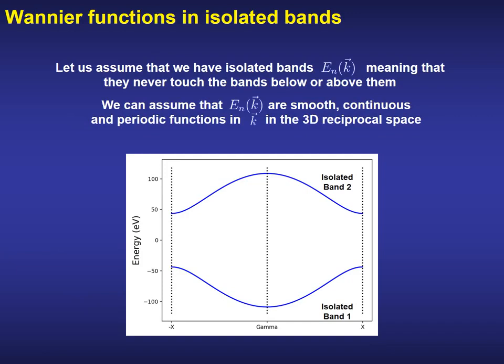So let's start with the definition. To simplify the discussion, we can start with a simple case, although all the concepts that will be introduced from now on can be generalized to more complex band manifolds. Imagine that we have a set of isolated bands defined on the whole Brillouin zone labeled by the discrete band index n. By isolated, we mean that they never touch the bands below or above them. They do not cross at any point of the Brillouin zone.